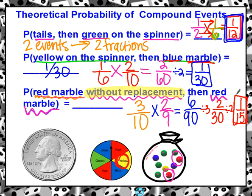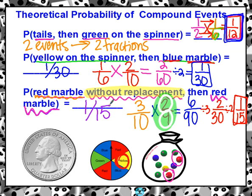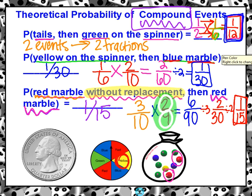So we drew a red marble, did not put it back, and then drew another red marble. The biggest thing to remember is this 2/9 — these things were changed because this original red marble was in the bag, and when we drew it, it changed the total for our second event. Our final probability for that one was 1 out of 15. Remember, when working with compound events, you have as many fractions as you have events. If you have four events, you should have four fractions; seven events, seven fractions. And the way we solve them is top times top and bottom times bottom.